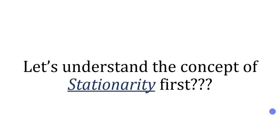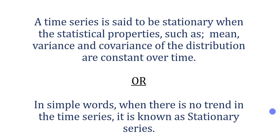So let's understand the concept of stationarity first. Statistically, a time series is said to be stationary when properties of the distribution such as mean, variance, and covariance are constant over time — they are not changing. In simpler words, when there is no trend in the time series, it is known as a stationary series.